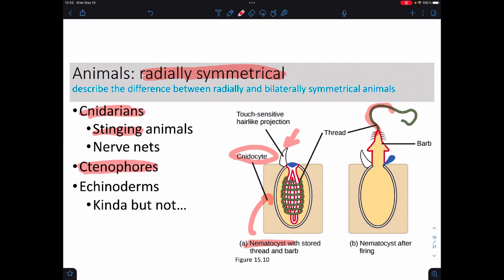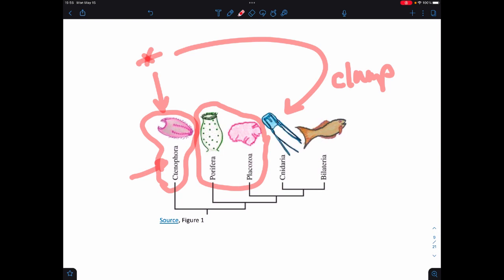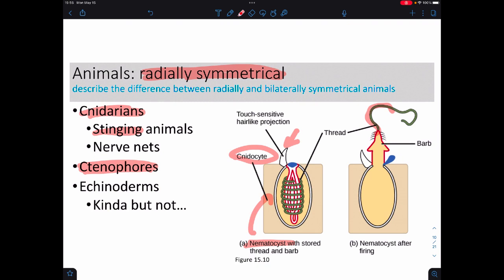The ctenophores, I know there's a c in cnidarian and ctenophore, but you don't pronounce the c. The ctenophores are these ones right here, and these are comb jellies. They don't sting, and there's actually a paper that just came out about their nervous system, and it's unlike any other nervous system on Earth. So it's led to a whole bunch of interesting questions.